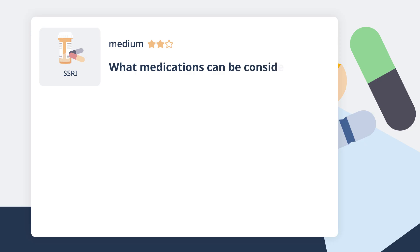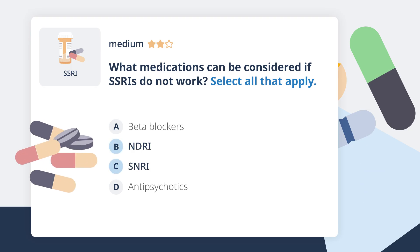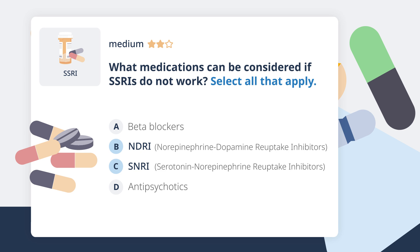What medications can be considered if SSRIs do not work? Select all that apply. If SSRIs are not effective in treating depression, alternative medications such as serotonin-norepinephrine reuptake inhibitors (SNRIs) and norepinephrine-dopamine reuptake inhibitors are often considered. Antipsychotics, though sometimes used in treatment-resistant depression, are not first-line alternatives for SSRIs and are typically reserved for cases with severe symptoms.